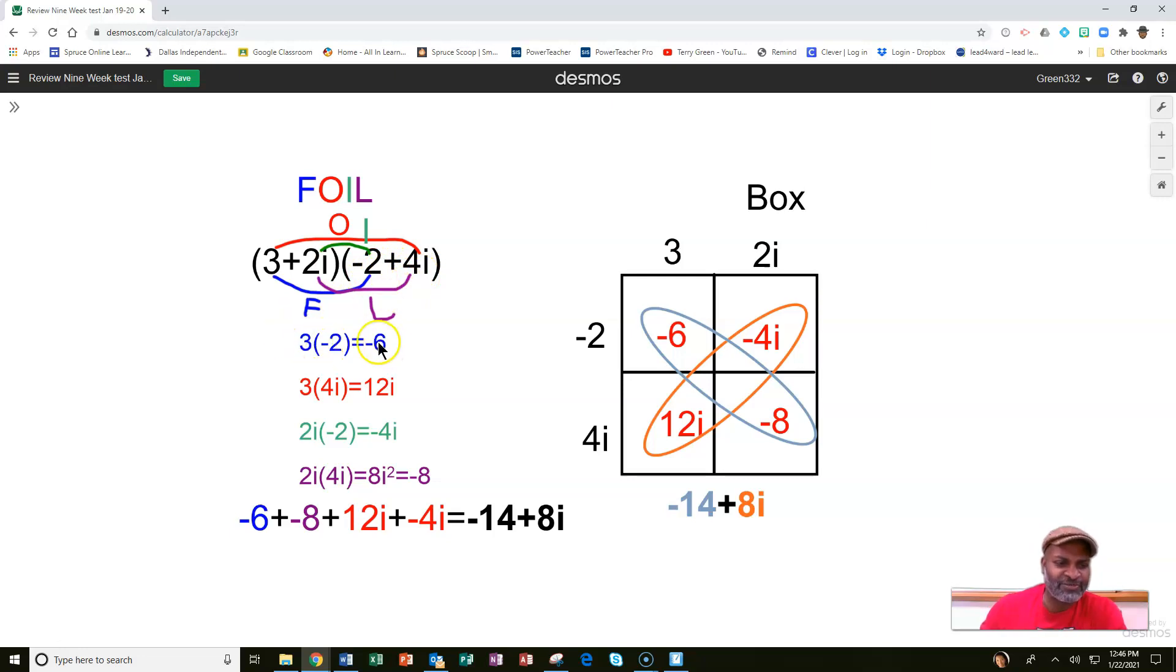So we got the first terms, then the outside. Follow the red line on the outside terms. 3 times 4i. 3 times 4 is 12. And you put the i right there. Notice the colors. Then for the inside terms, you got 2i times negative 2. That's going to be a negative 4i.